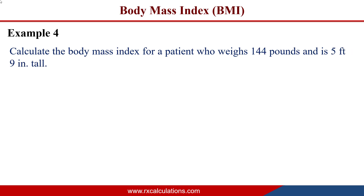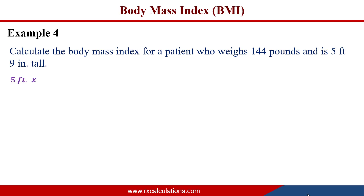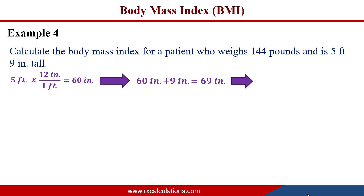Example 4: Calculate the body mass index for a patient who weighs 144 pounds and is 5 feet 9 inches tall. The weight is in pounds and the height is in feet and inches, so we use the imperial BMI equation, but first convert the height to inches: 5 ft × 12 in/ft = 60 inches, plus 9 inches = 69 inches.